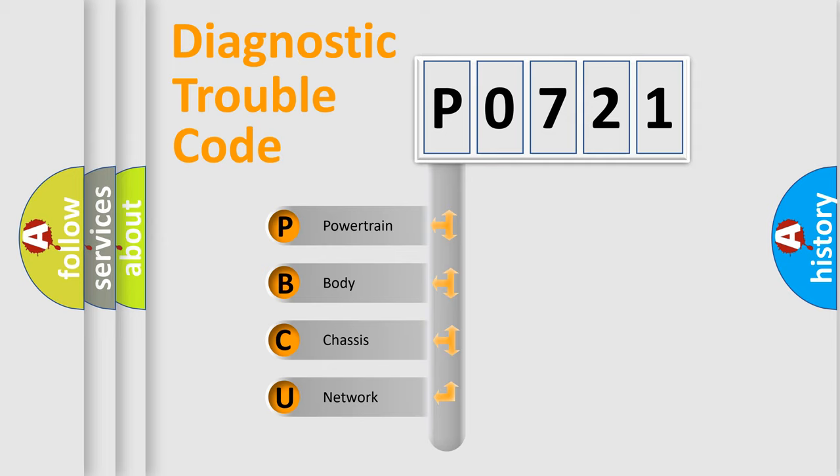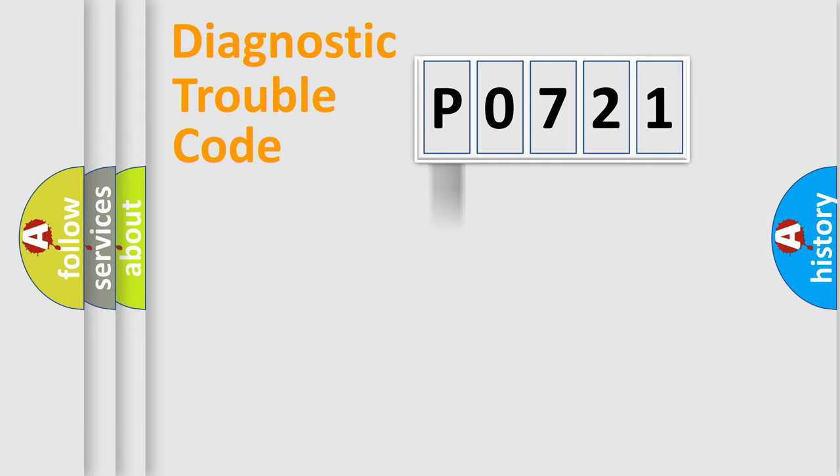We divide the electric system of automobile into four basic units: Powertrain, Body, Chassis, Network. This distribution is defined in the first character code.